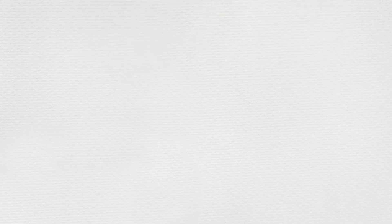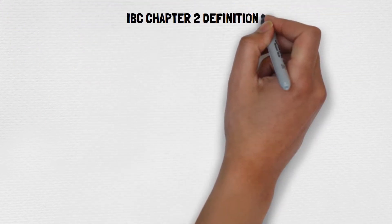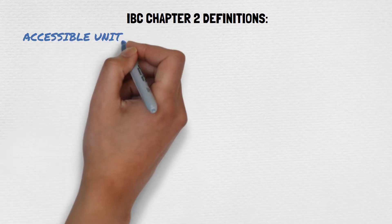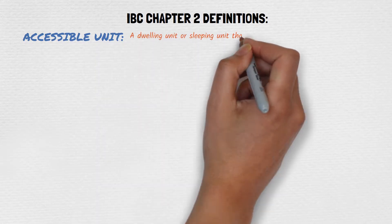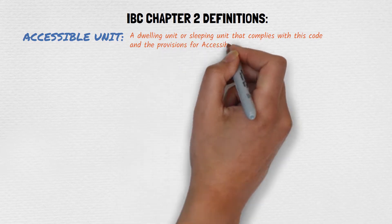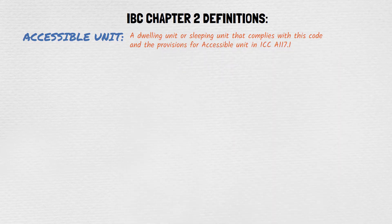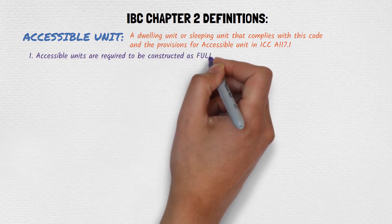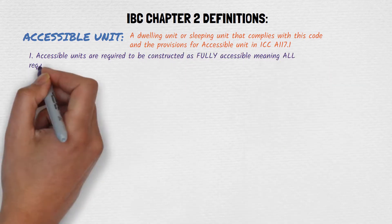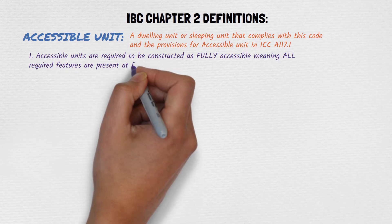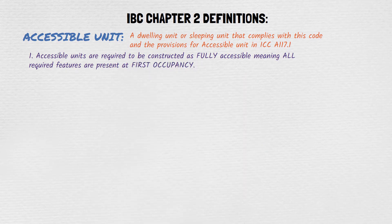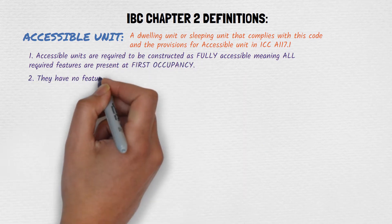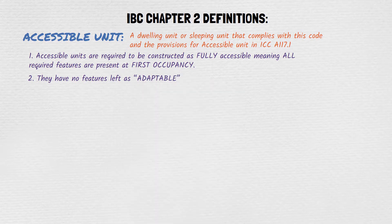Chapter 2 of the IBC helps us get more information on each one of these units. An accessible unit is defined as a dwelling unit or sleeping unit that complies with this code and the provisions for accessible units in ICC A117.1. In short: accessible units are required to be constructed as fully accessible, meaning all required features are present at first occupancy, and they have no features left as adaptable.